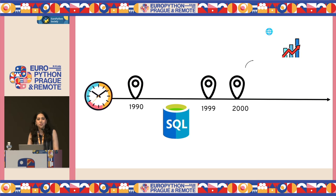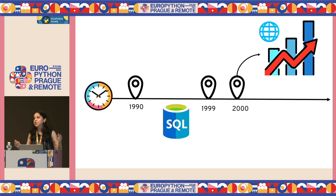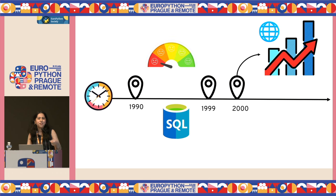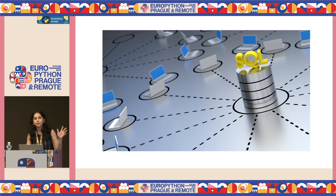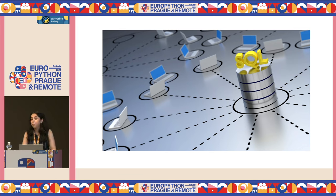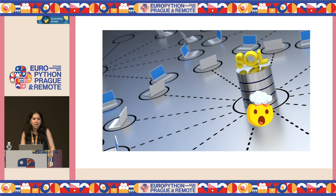Fast forward to the 2000s — the internet explodes, and so does the amount of data. Suddenly, relational databases started to buckle under the pressure. Designed for an entirely different era, they couldn't handle the massive scale and the blazing speed demands of modern world applications. Developers started to feel the bottlenecks due to slow queries and performance issues, and there was a need for a new solution.